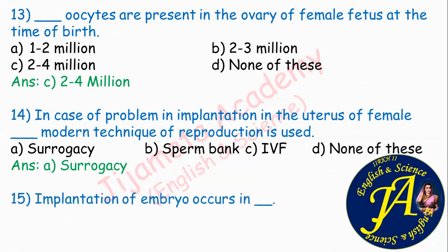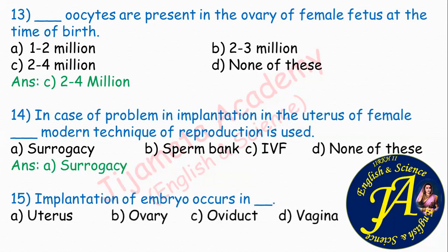Implantation of embryo occurs in dash. Options are uterus, ovary, oviduct, vagina. The correct answer is option A: implantation of embryo occurs in the uterus.